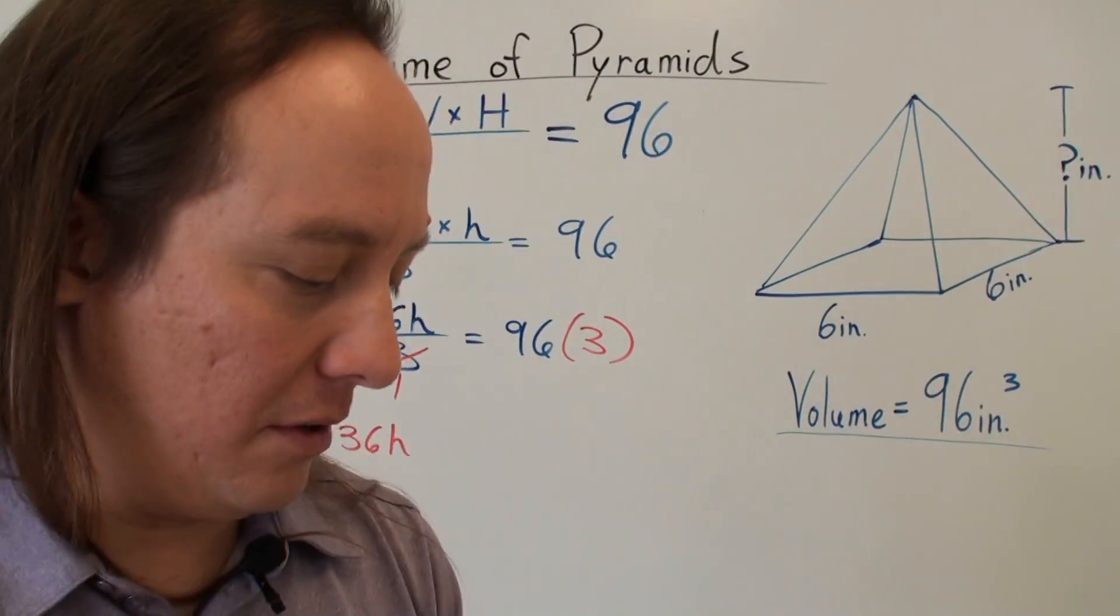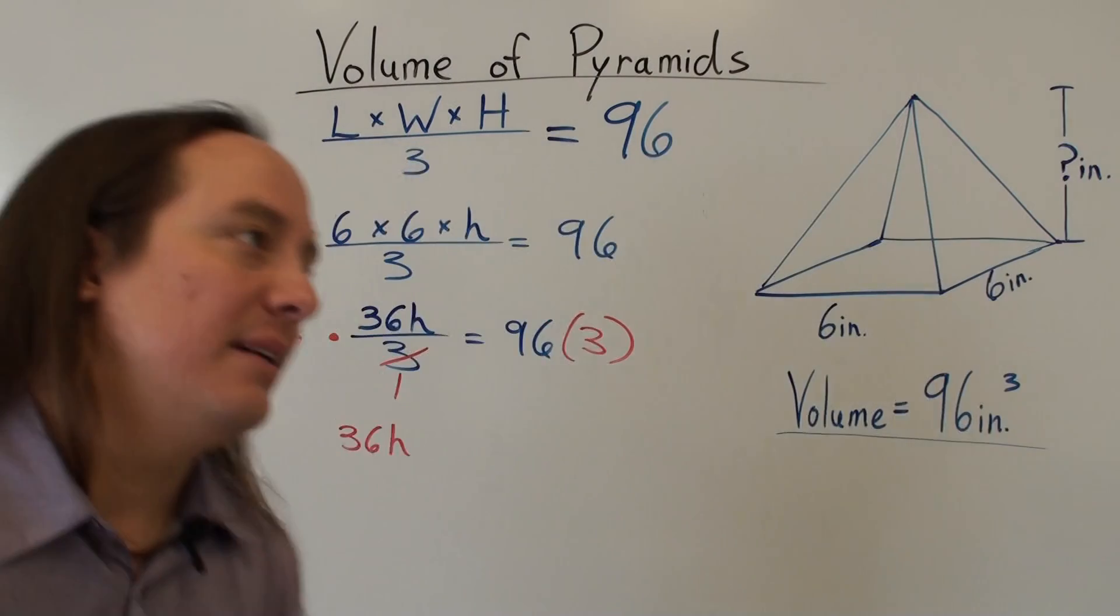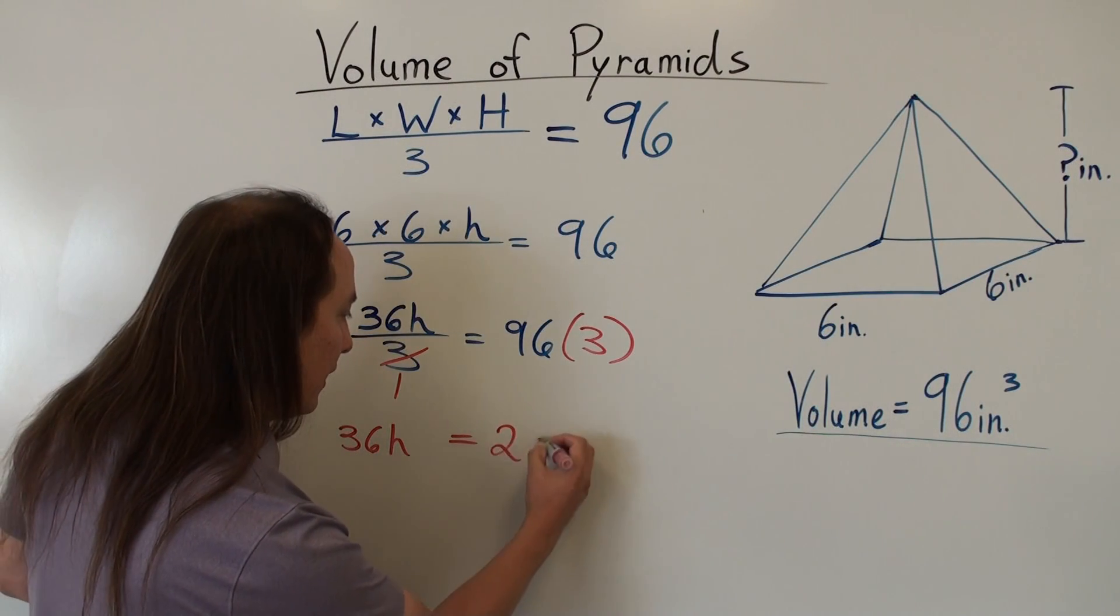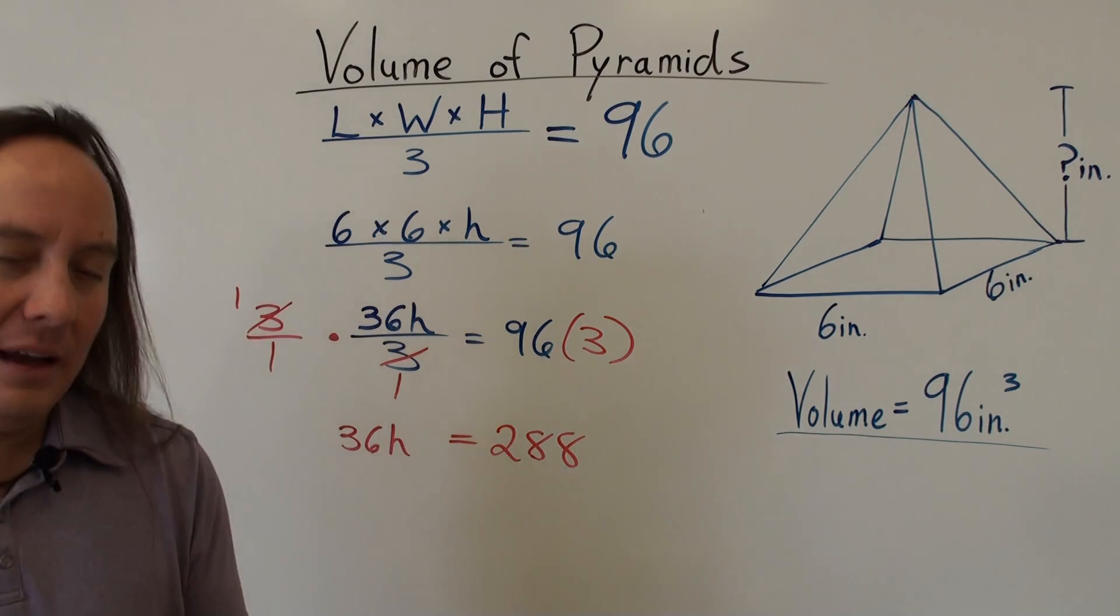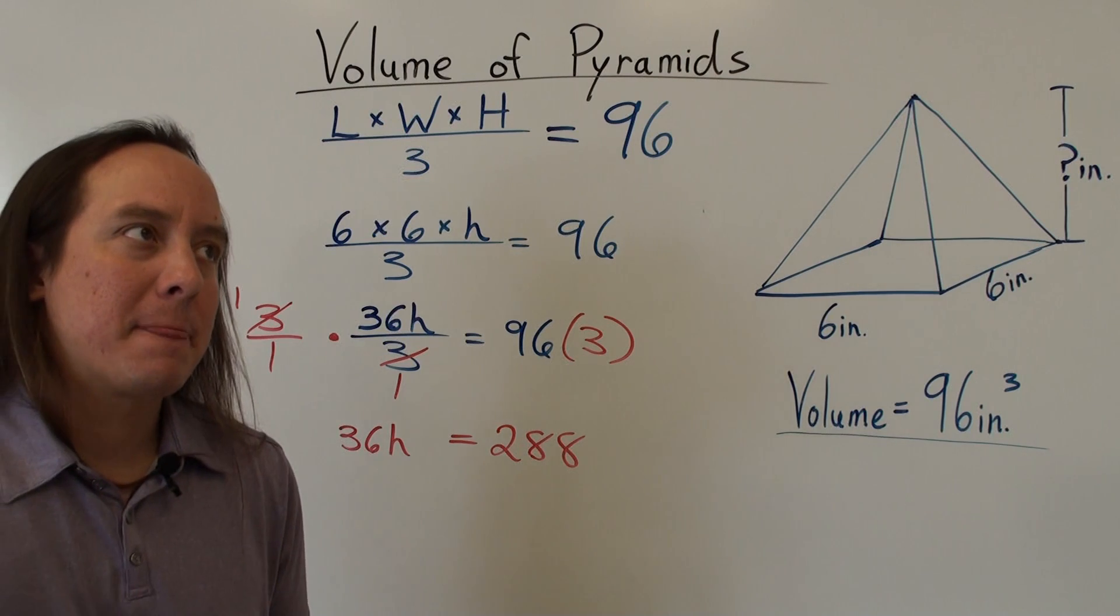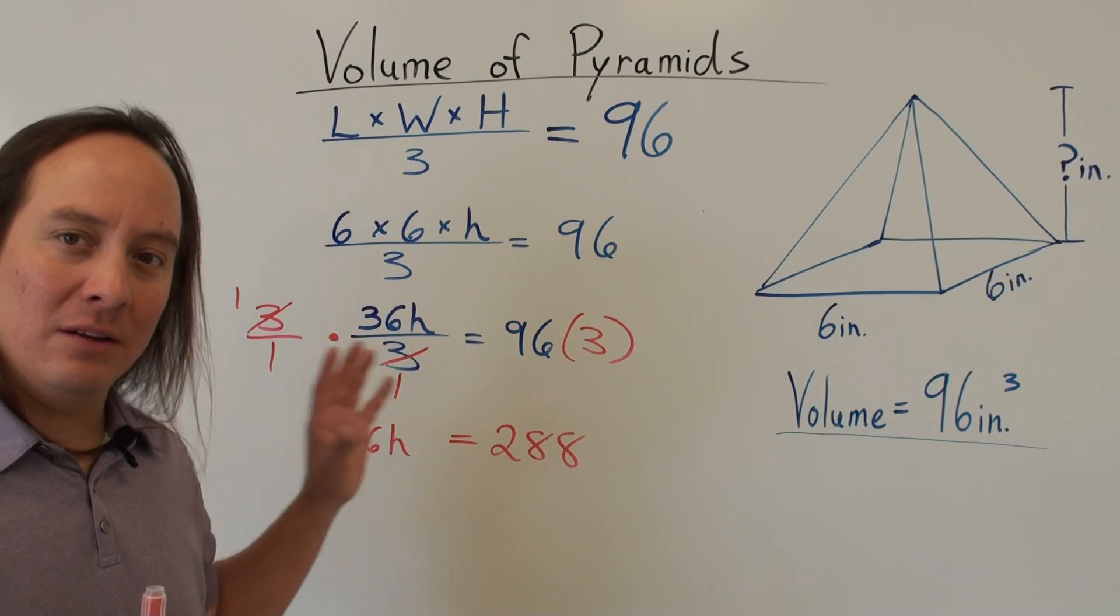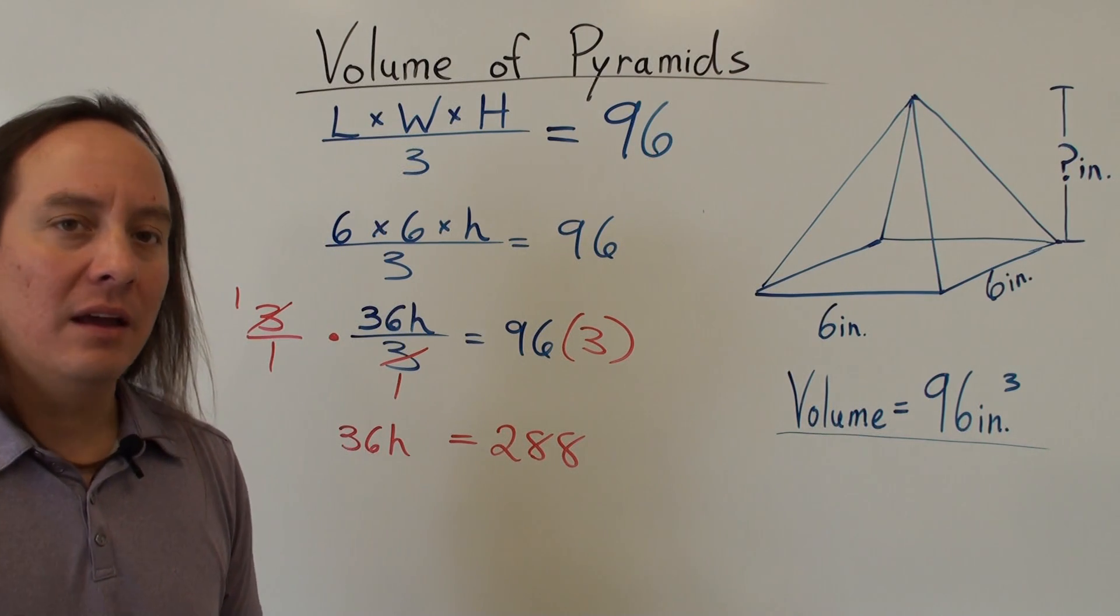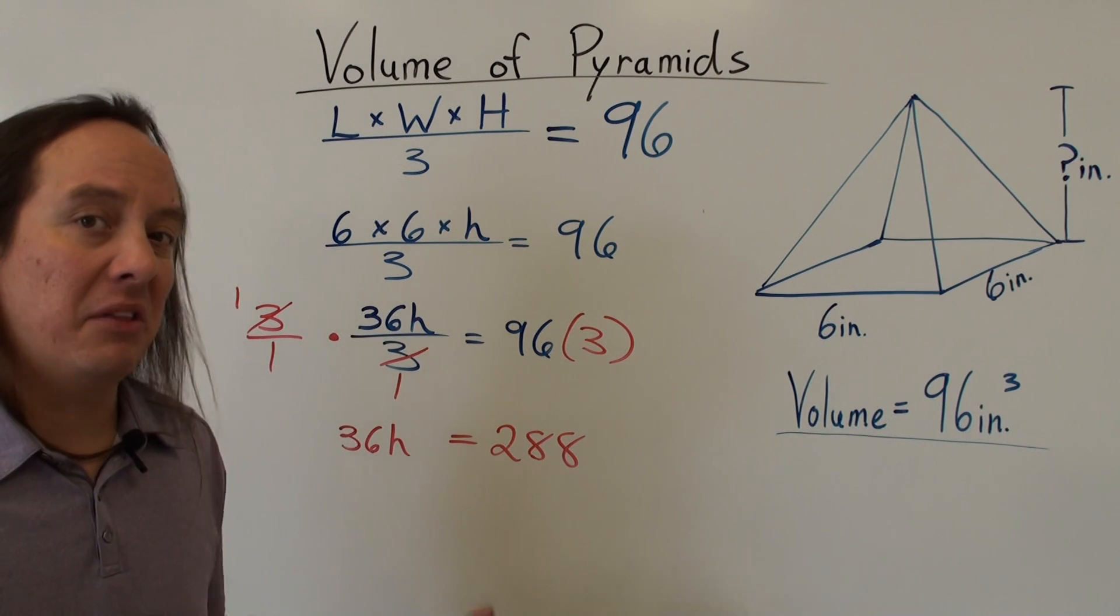96 times 3, I can do it by hand, but I might as well just do it on the calculator really quick. 96 times 3 is equal to 288. So we have 288. Equal to 288. So this is the point. So all we did is get rid of the fraction. We're just trying to get rid of that 3, the division by 3. So we just multiply by 3.